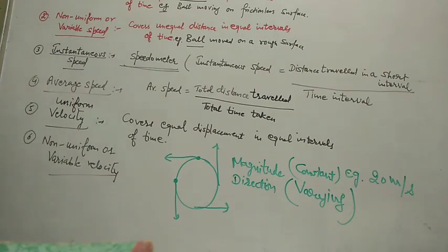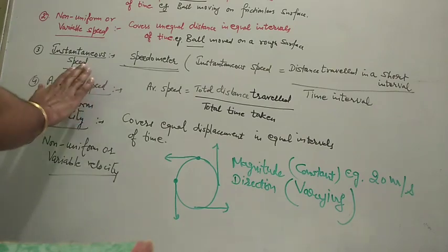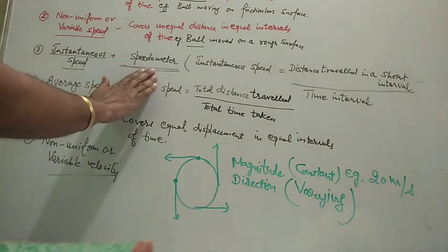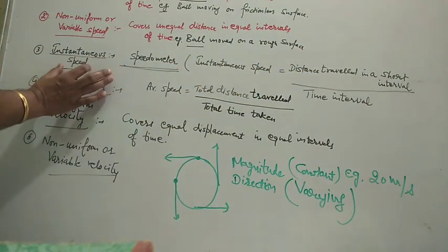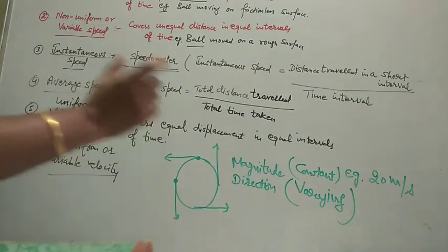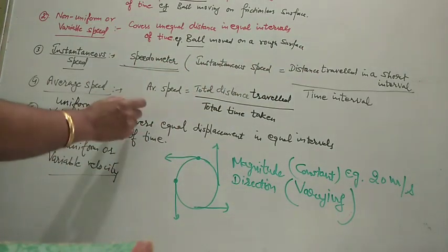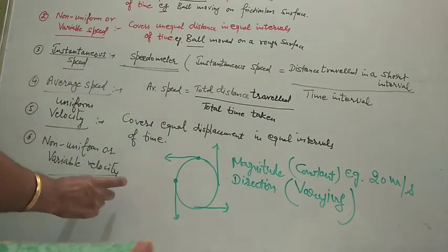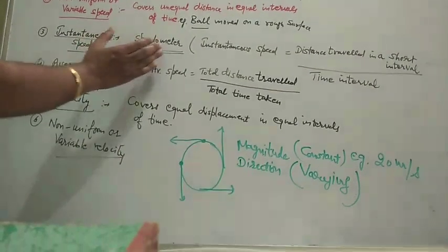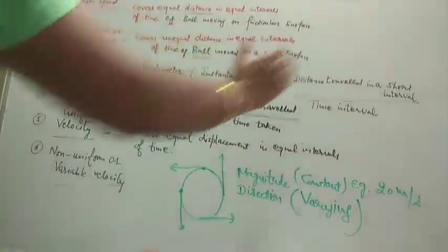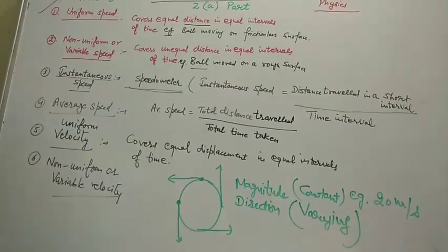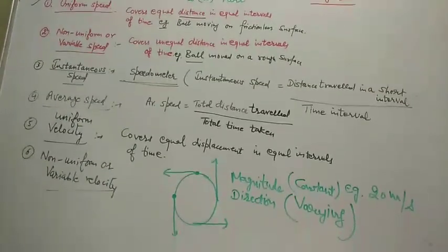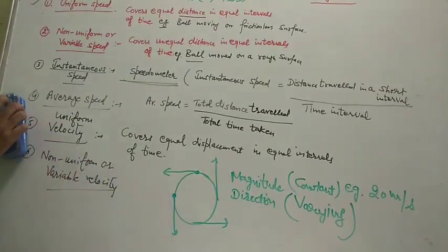Seventh is instantaneous velocity. Instantaneous velocity is the same as instantaneous speed, but you must also consider that the direction should be specified for that particular short interval.